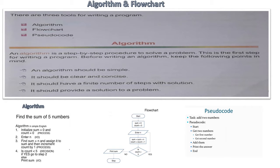There are three tools for writing a program: algorithm, flow chart and pseudo code. An algorithm is a step by step procedure to solve a problem.